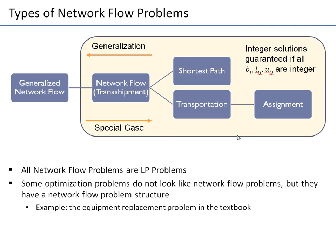I want to talk about one more problem in this chapter, which is generalized network flow. The name suggests it is a generalization of what we talked about so far — a generalization of the transshipment. There will be something extra introduced, not a restriction, but a relaxation of the way we can formulate the problem. In all cases they are still within linear programming.